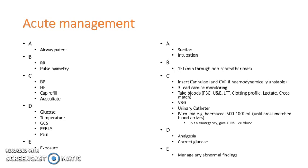D — disability: check glucose, temperature, GCS, PERLA, and pain. Give analgesia and correct glucose as needed. A raised temperature may indicate infection; abnormal PERLA would indicate neurological compromise. E — expose the patient to find other abnormalities, such as stab wounds in a trauma scenario or PR bleeds. Manage and note any abnormal findings.